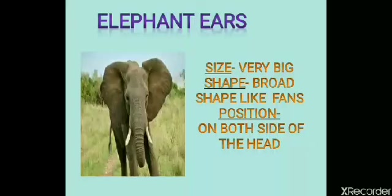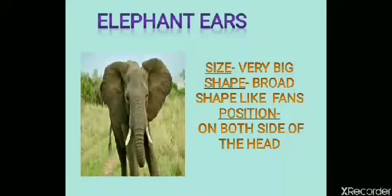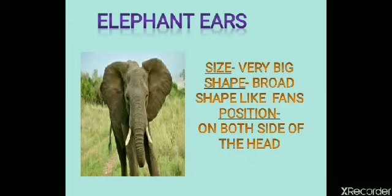Different animals have ears of different size, shape, and position. For example, look at this picture of the elephant. An elephant has very big ears. The shape of the elephant's ears is like fans, and they are located on both sides of the head.